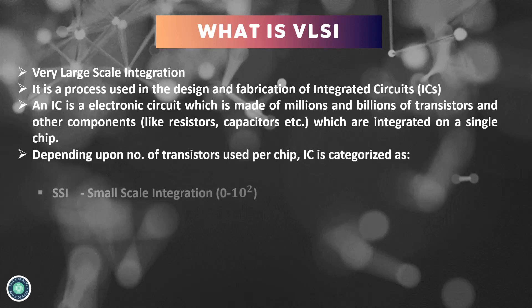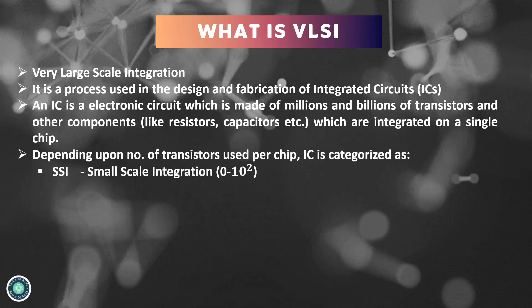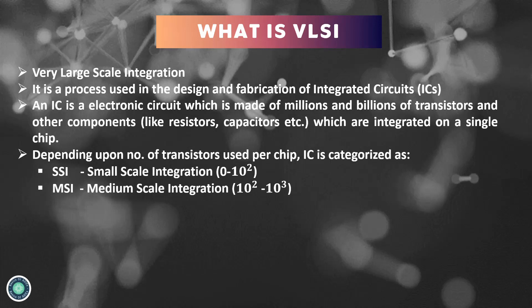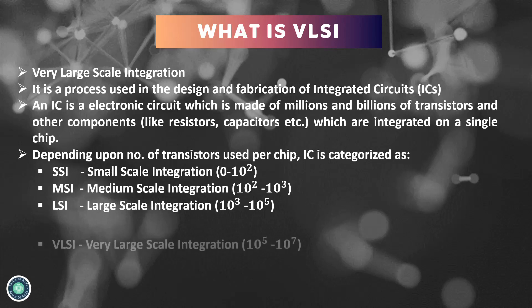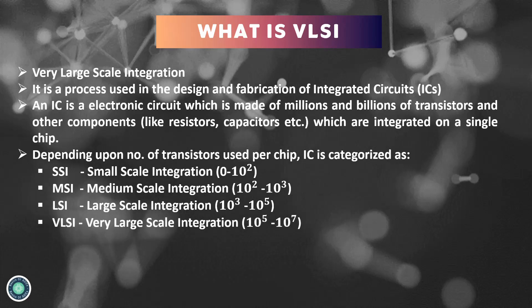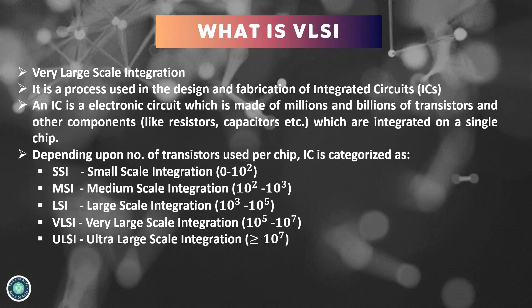Depending upon the number of transistors used per chip, integrated ICs are categorized as SSI — Small Scale Integration, with around 0 to 100 transistors; MSI — Medium Scale Integration, with 100 to 1000 transistors; LSI — Large Scale Integration, with 1000 to 1 lakh transistors; VLSI — Very Large Scale Integration, with 1 lakh to 1 million transistors; and finally ULSI — Ultra Large Scale Integration, with more than a million, even billions, of transistors.